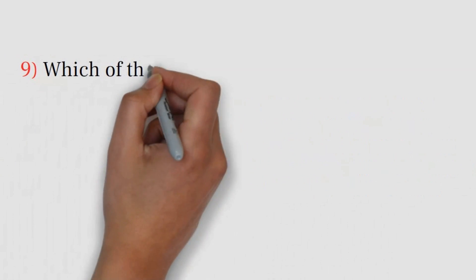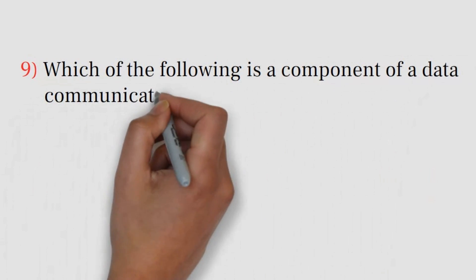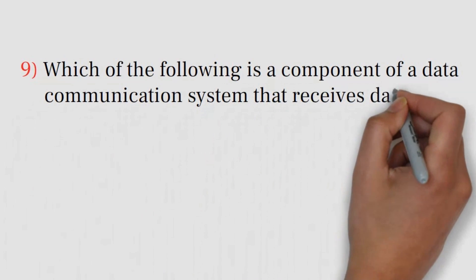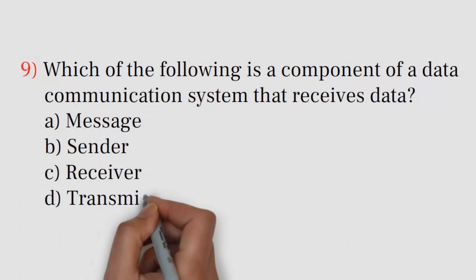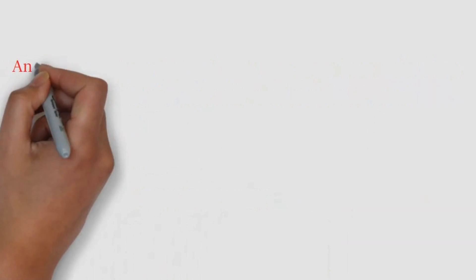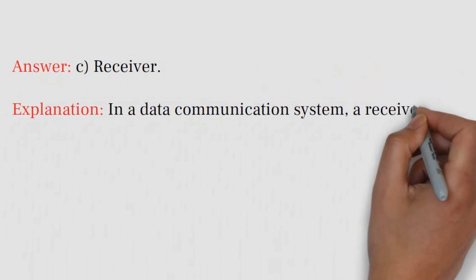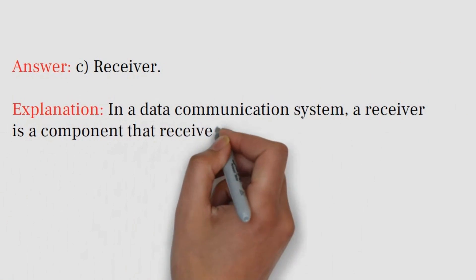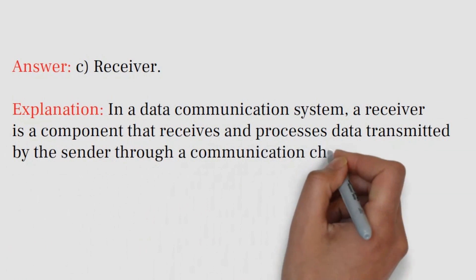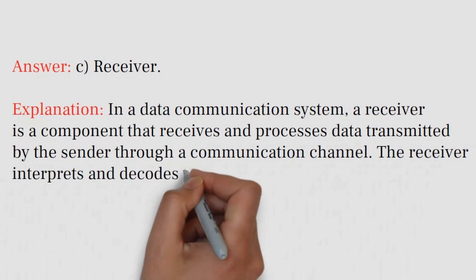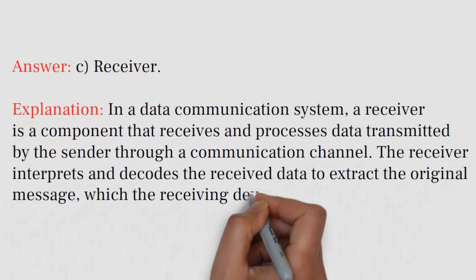Question number nine: Which of the following is a component of a data communication system that receives data? A) Message, B) Sender, C) Receiver, D) Transmission Medium. Answer: C) Receiver. Explanation: In a data communication system, a receiver is a component that receives and processes data transmitted by the sender through a communication channel. The receiver interprets and decodes the received data to extract the original message, which the receiving device can then use.